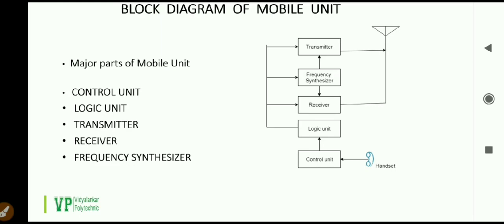On the other hand, when a signal is to be received, the duplexer routes it to the receiver input and isolates it from the transmitter output. The transmit and receive frequencies are spaced 45 MHz apart, which minimizes interference between transmitting and receiving frequencies.